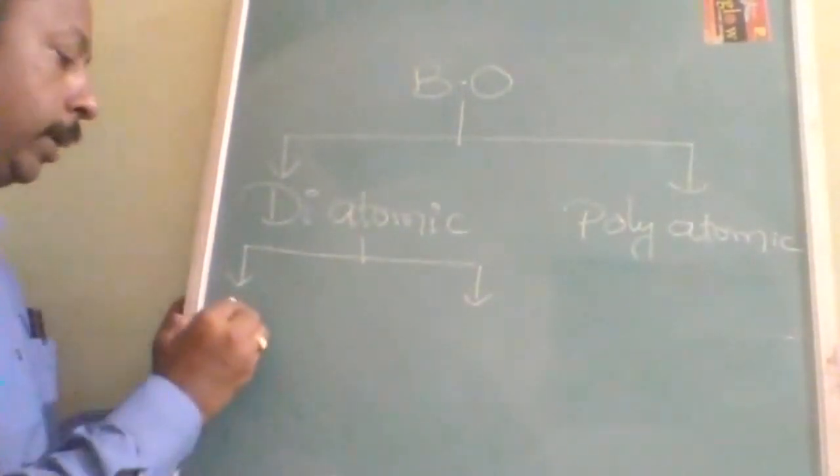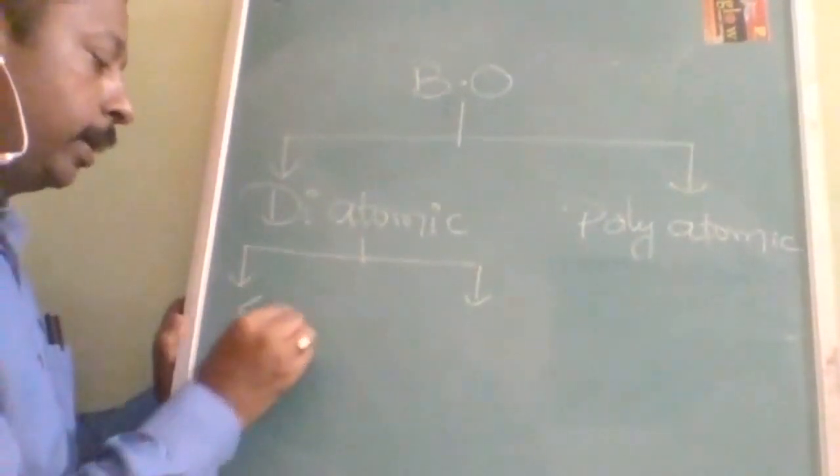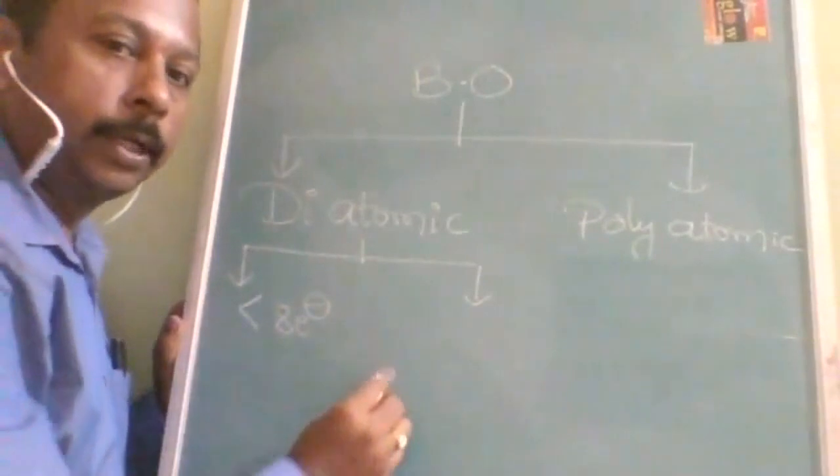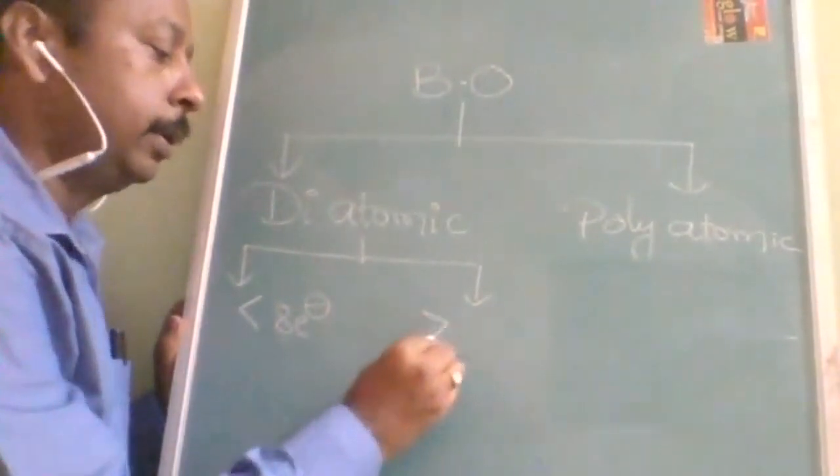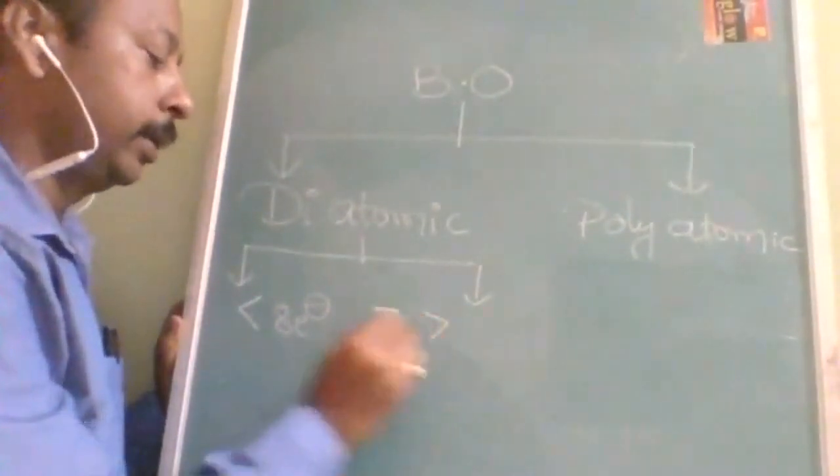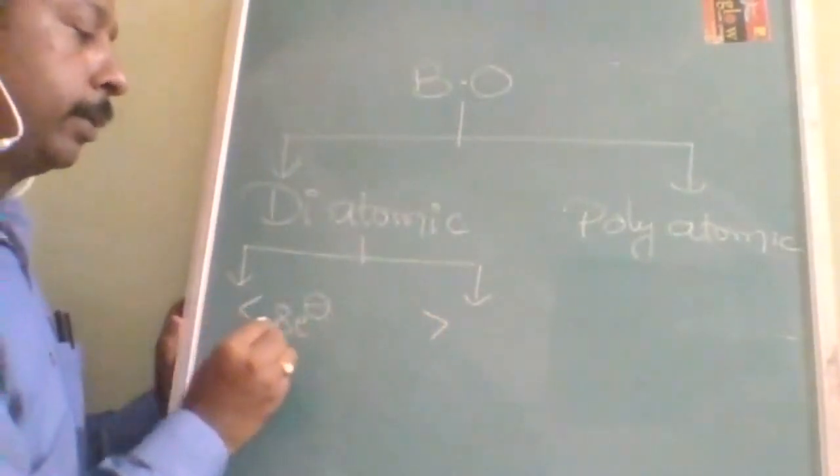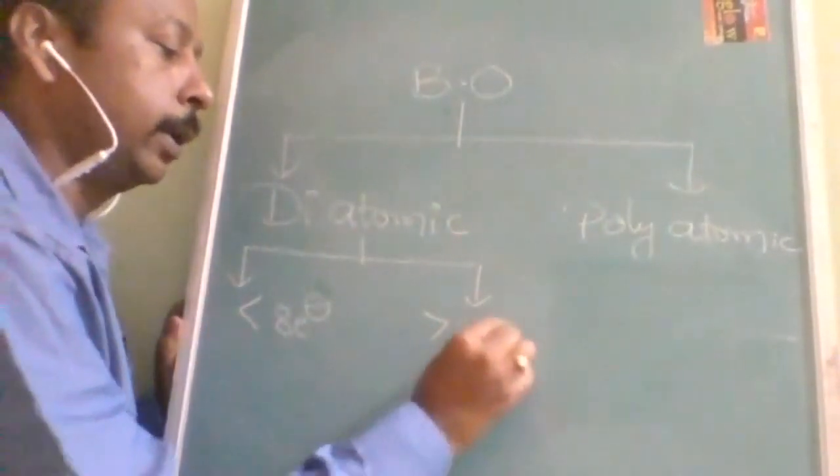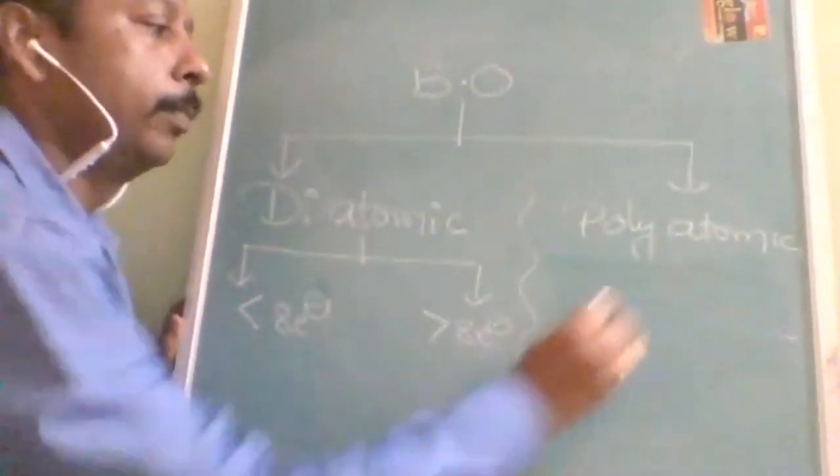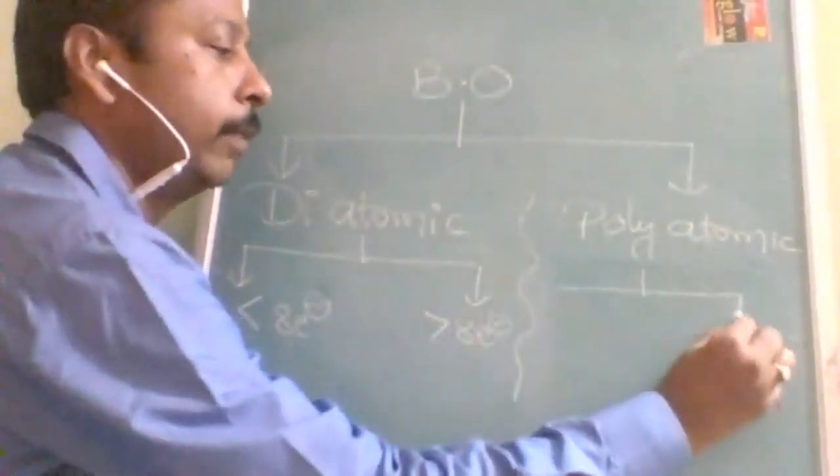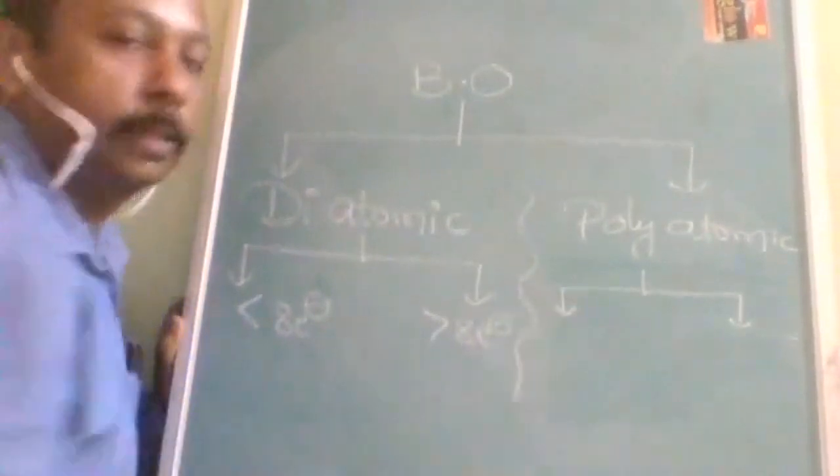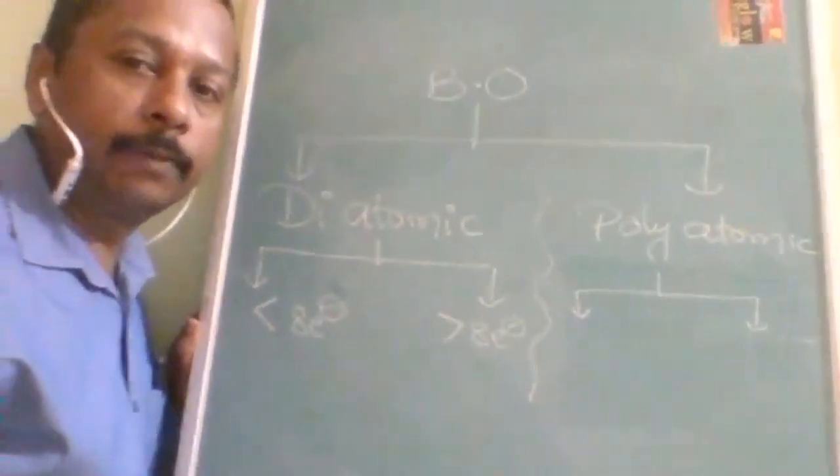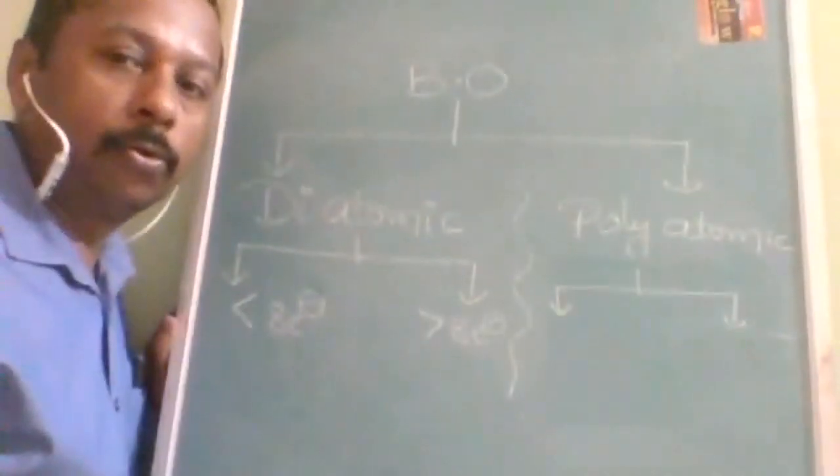OK, if the molecule contains less than eight electrons, one trick. OK, if the molecule contains less than eight electrons, if the molecule contains greater than, OK, number of electrons are less than eight and number of electrons are greater than eight electrons. OK, and here polyatomic, again dividing it into two parts.